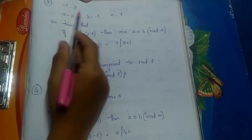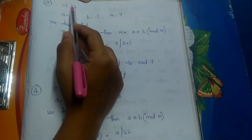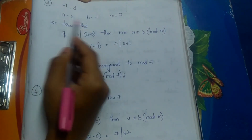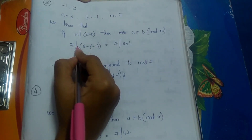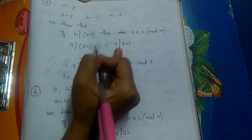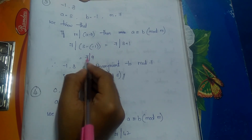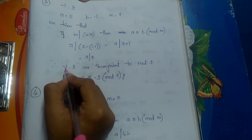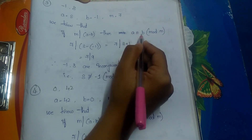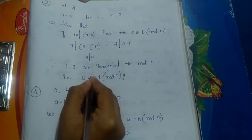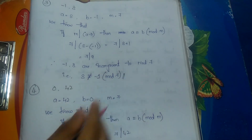Third pair: (−1, 8). Here a = 8 and b = −1, m = 7. So 7 divides 8 minus (−1), which equals 7 divides 9. Since 7 does not divide 9, the pair (−1, 8) is incongruent to modulo 7, written as 8 is incongruent to −1 modulo 7.